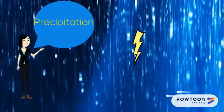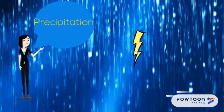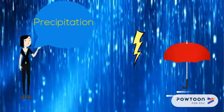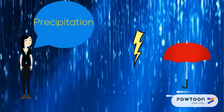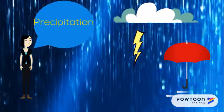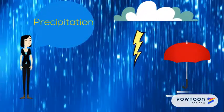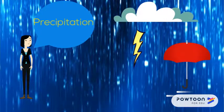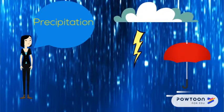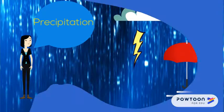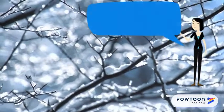Now let's look at precipitation. Wizards, precipitation is when moisture from the air reaches the surface of the earth. Precipitation can be liquid water, like rain, or it can be frozen water, like hail or snow.